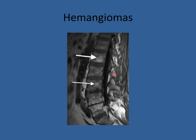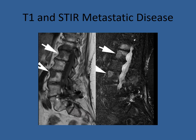Hemangiomas are quite common. When MRI first became available 40-50 years ago, some were biopsied because we weren't clear what they were — they turned out to be fatty infiltration. You have to be able to differentiate hemangiomas from metastatic disease. You can see how circumscribed metastatic tumors are, and they light up on STIR images. It's important to differentiate hemangiomas from metastatic disease.